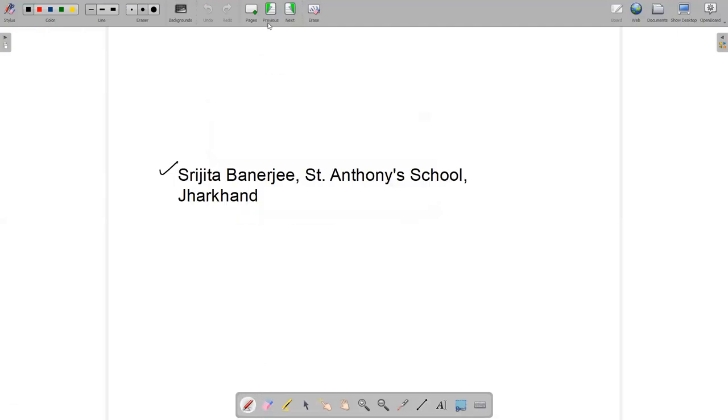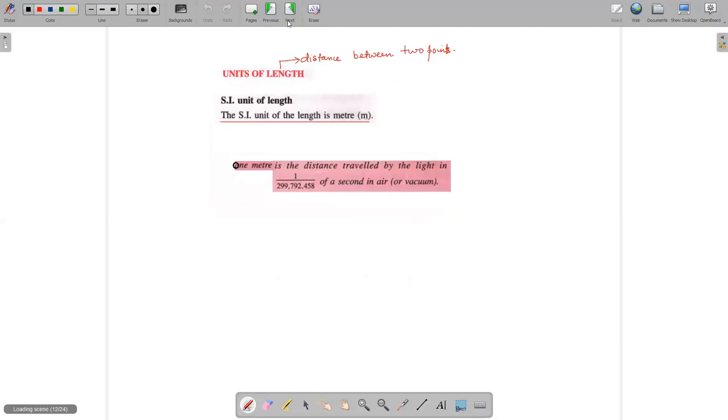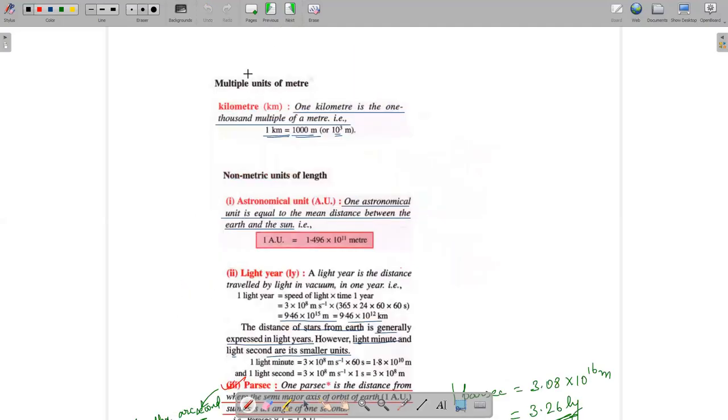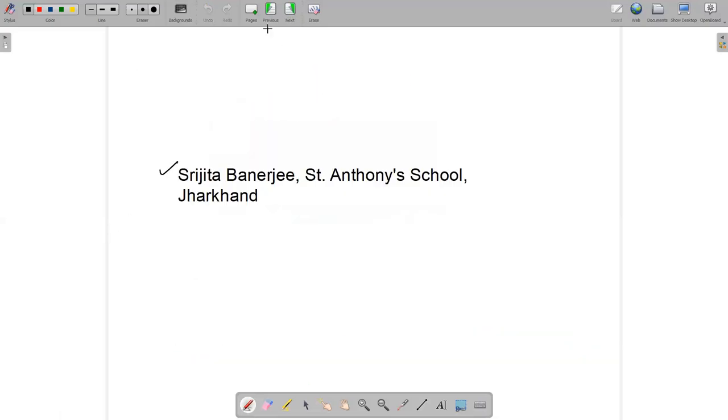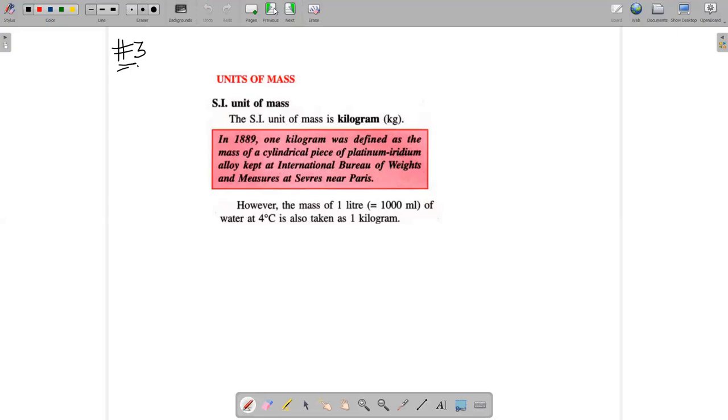Humne previous lecture mein units of length ko kiya tha, alag-alag units of length kiya tha, jis mein humne sub-units of meter, multiple units of meter, non-metric units of length. Bohut sari cheezo ko humne dekha tha, angstrom, fermi, parsec. Today, we will start with the units of mass. Toh mass ka jo SI unit hoota hai, we all know that is kilogram. Very important point. They ask you in question, what is the SI unit of mass? Mass ka SI unit kilogram hoota hai.